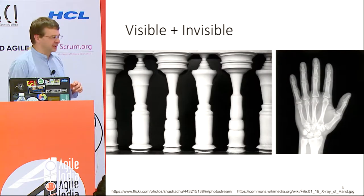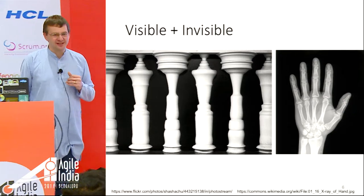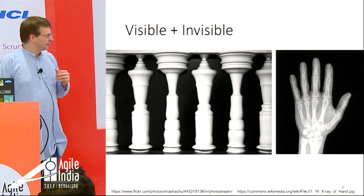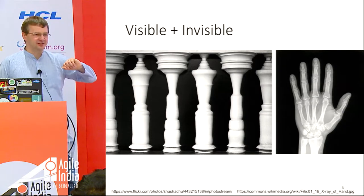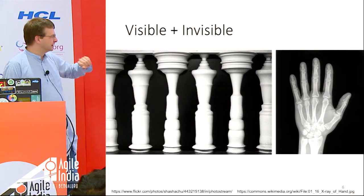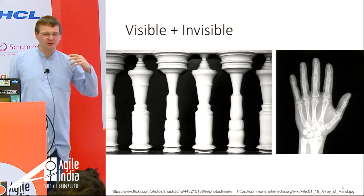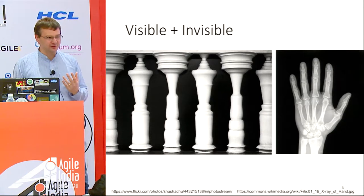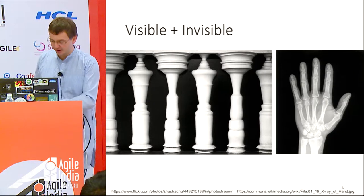Much of the information that we'd like isn't necessarily visible to us. On the left there are people hidden in pictures. On the right is an example of an X-ray where using tools allows us to see something important that we couldn't see without the tools. The same holds true for our software.